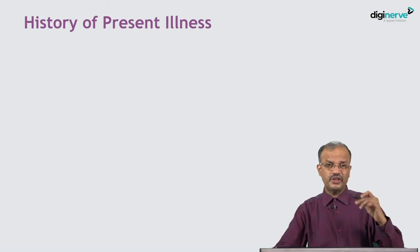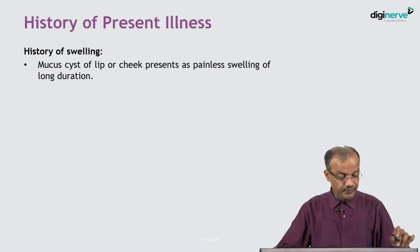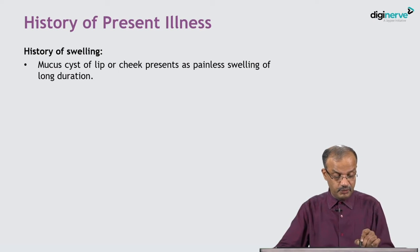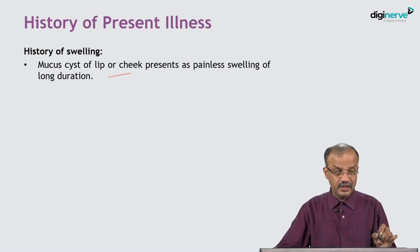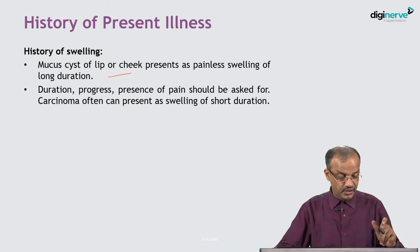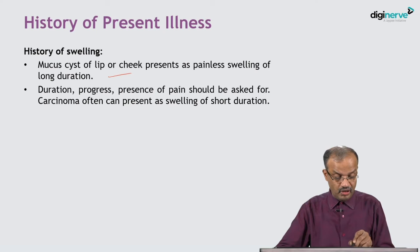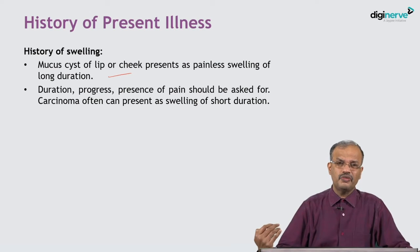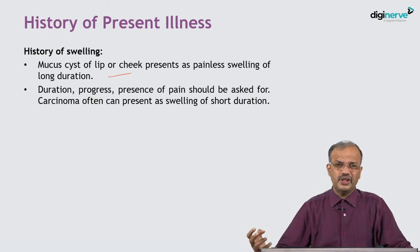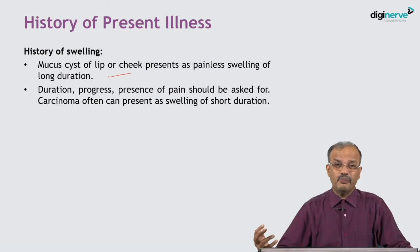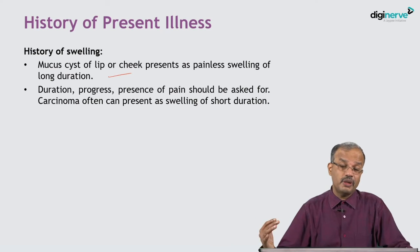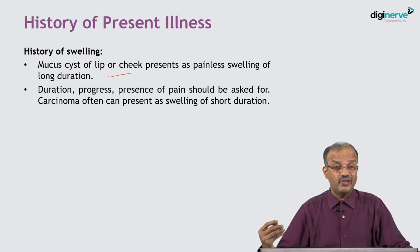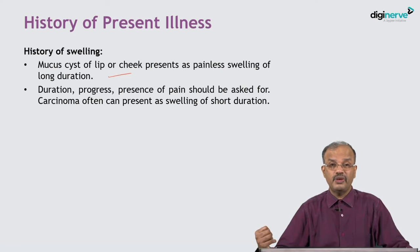After chief complaints, we go to the history of present illness. Mucoceles of the lip or cheek present as painless swellings of long duration. Though benign, they may present as a cyst. Duration, progress, and presence of pain should be asked. Carcinoma often presents as a swelling of short duration — many times as an ulcer, sometimes as a proliferative lesion, sometimes as an infiltrated entity particularly in the tongue. Minor salivary gland tumours are common in the palate, presenting as a swelling rather than an ulcer, with ulceration eventually forming over the summit.